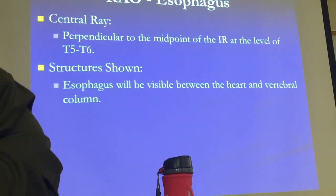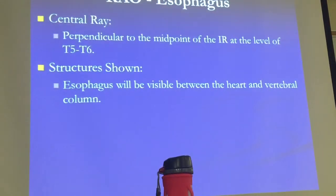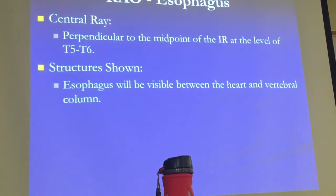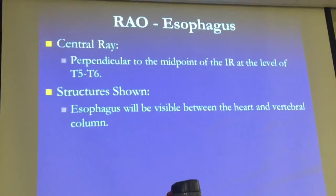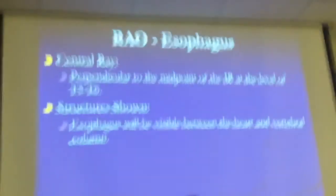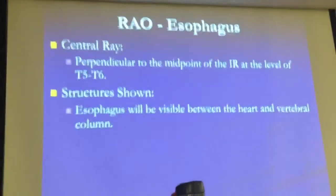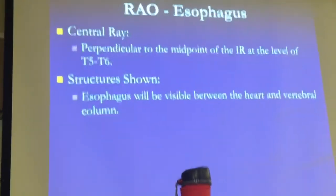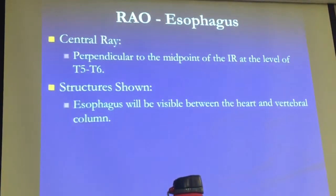One thing I didn't explain — before the overheads, what typically happens in a fluoroscopy study is the radiologist comes in, gives the patient barium, and sees the esophagus in real time. They see what is wrong with the patient. When they're done with their fluoroscopy part, then you take over and do the overheads. Does that make sense?